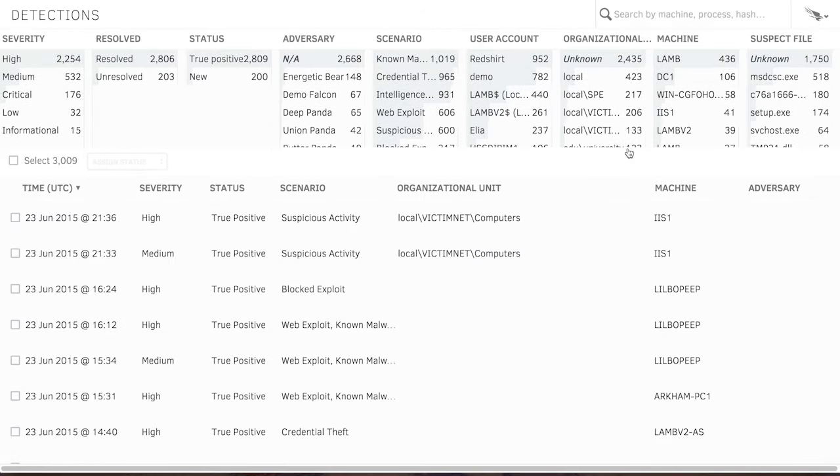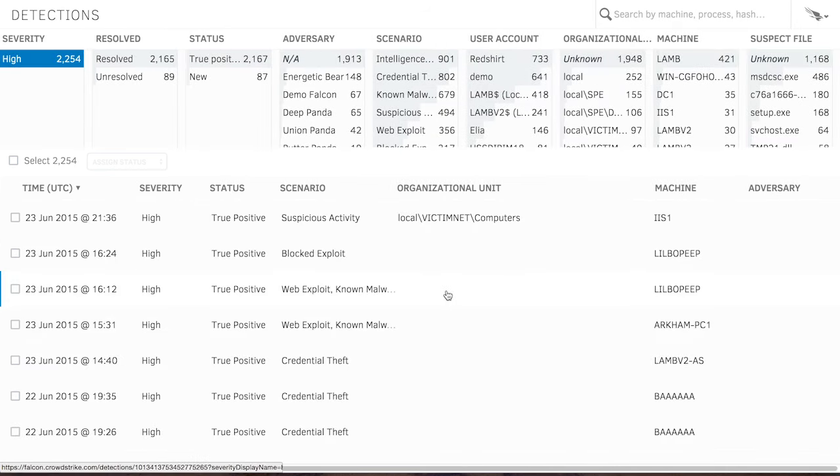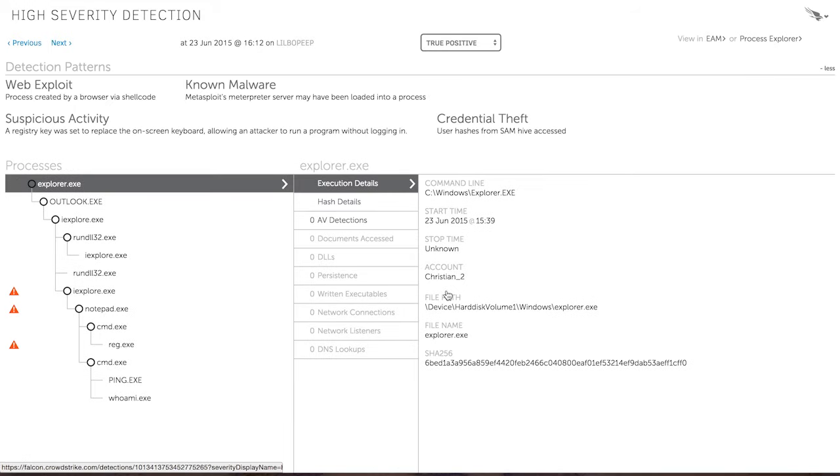Or we can just view all the detections that have occurred across our entire environment. We can see these listed at a high level with various different fields that we can use to quickly sort and filter through all these different detections. And we can drill into them for additional detail, including real-time forensic information.